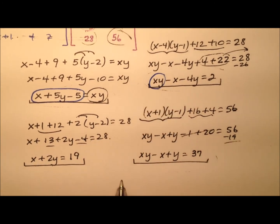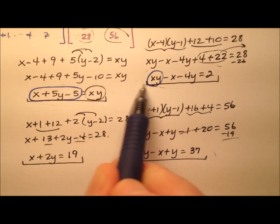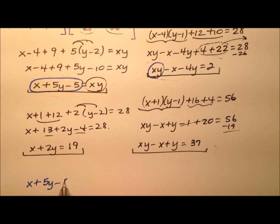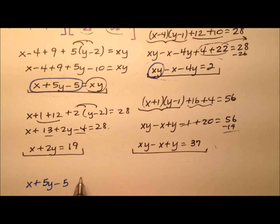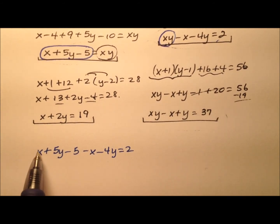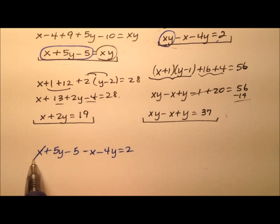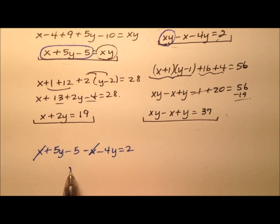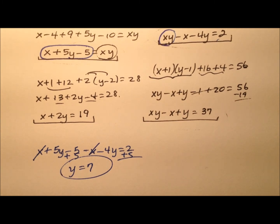Let's go ahead and simplify this a bit, x-x, oh, those cancel. So 5y-4y is y, and if I add 5 to both sides, y equals 7. That actually came out very smoothly.